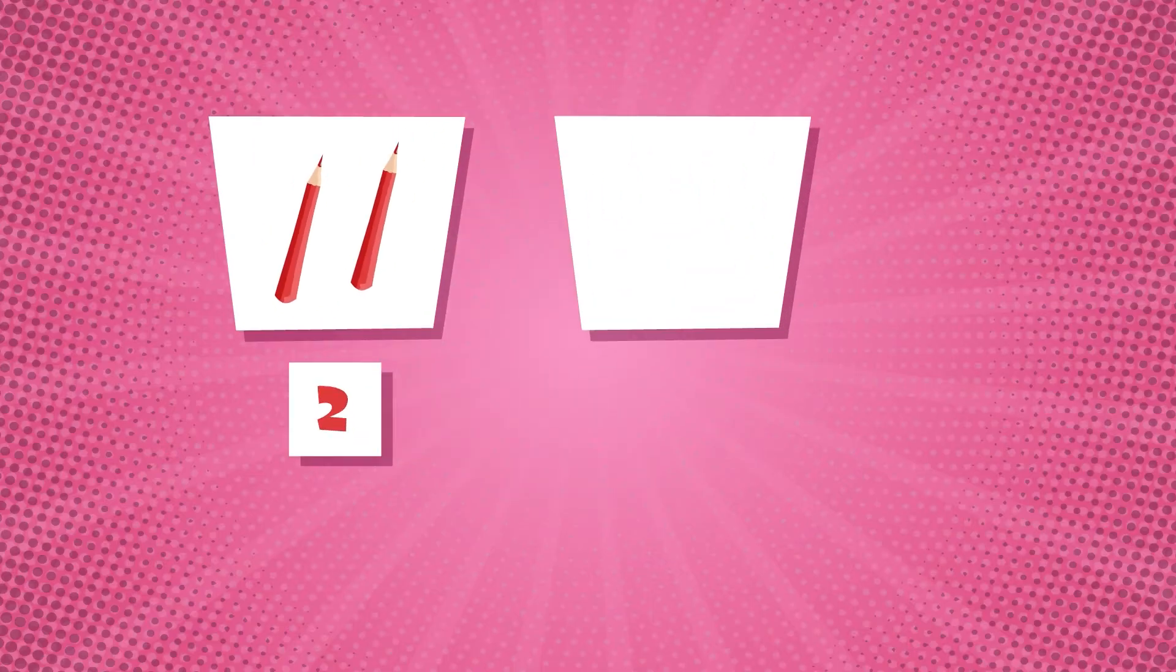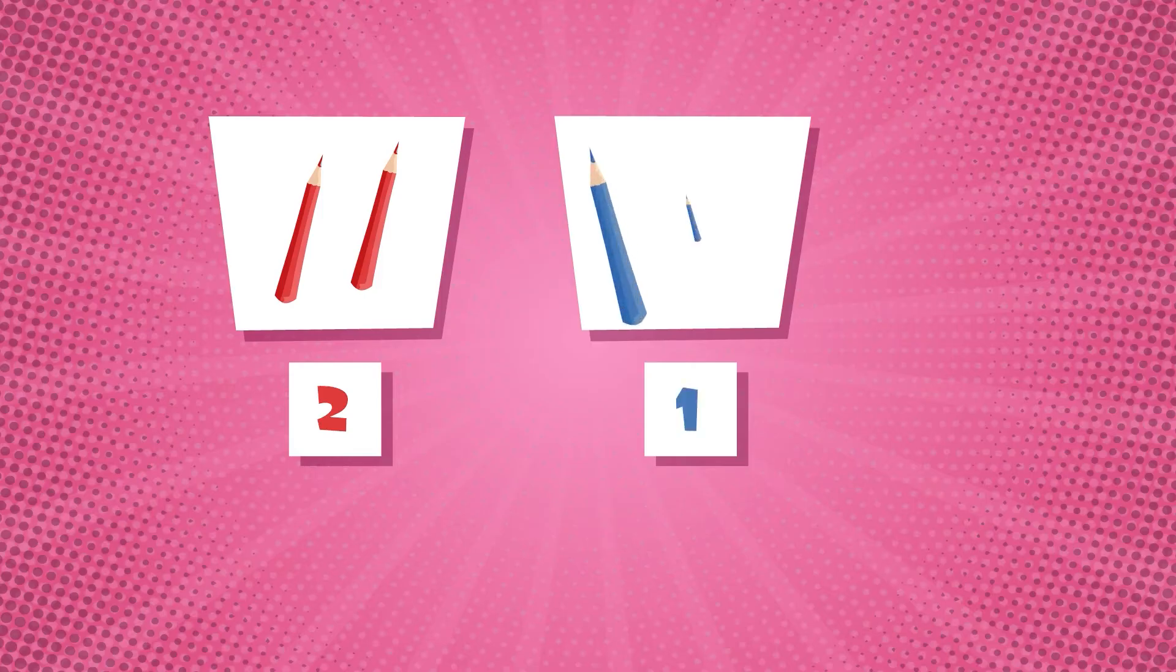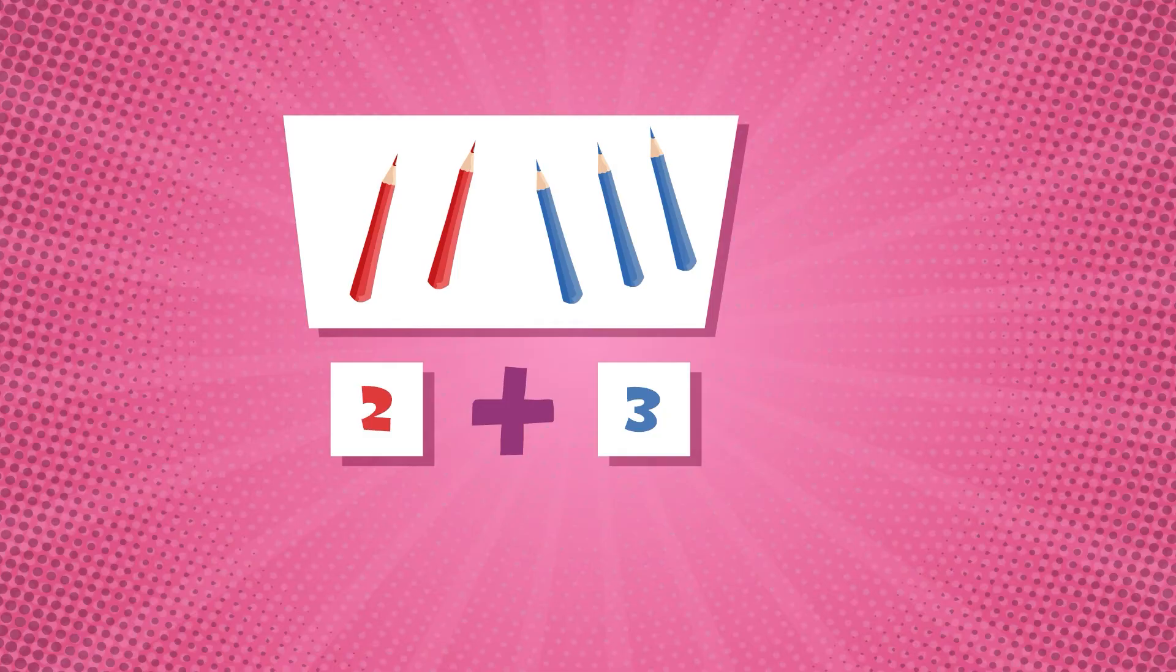Let me give you an example of how it works. If I take two red pencils—one, two—and three blue pencils—one, two, three—and then I group together all the red pencils and all the blue pencils.